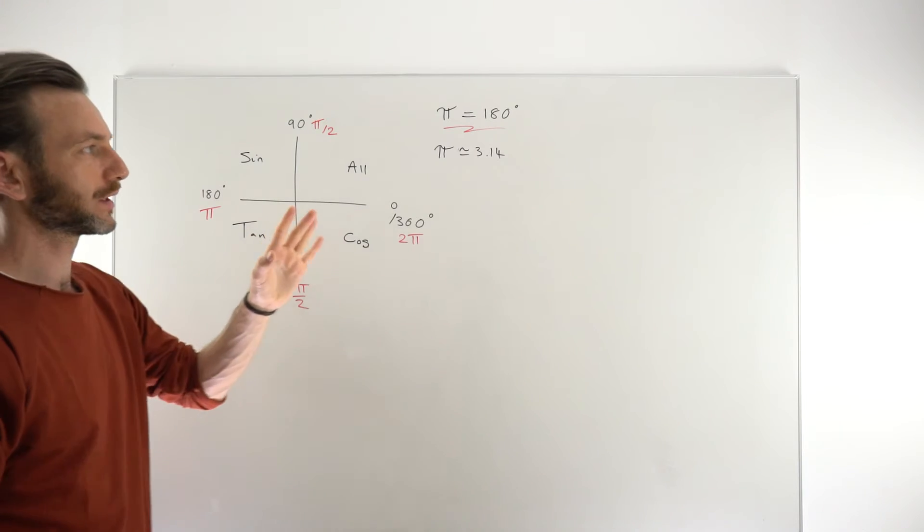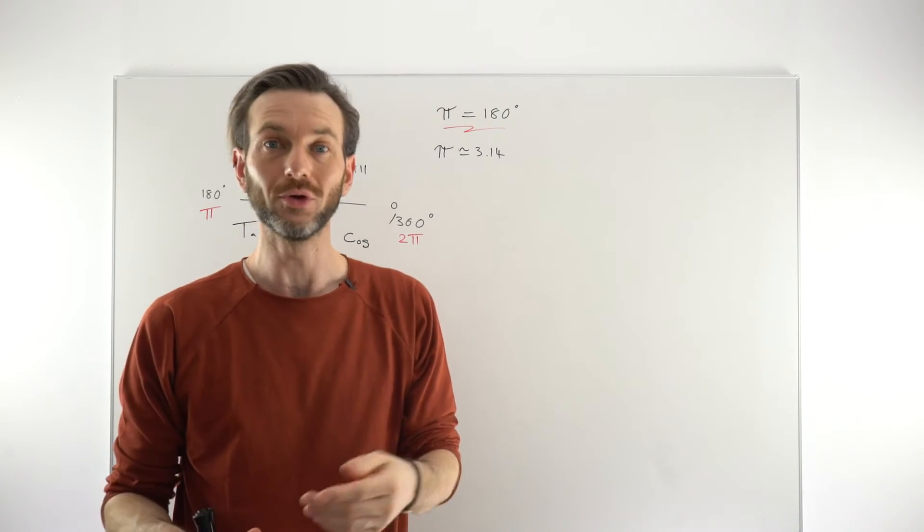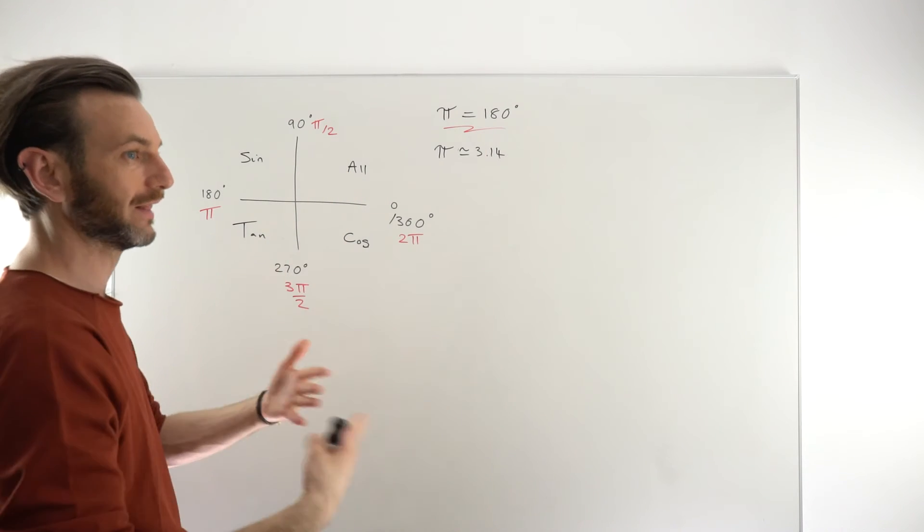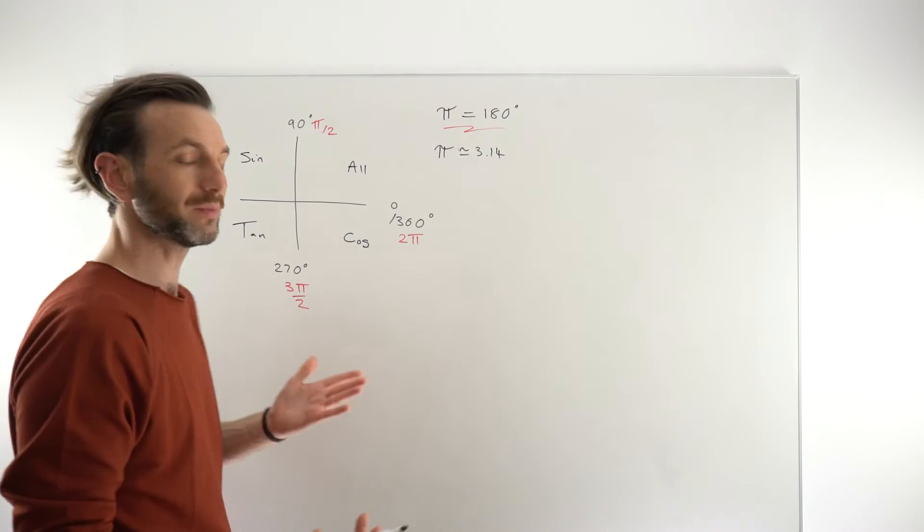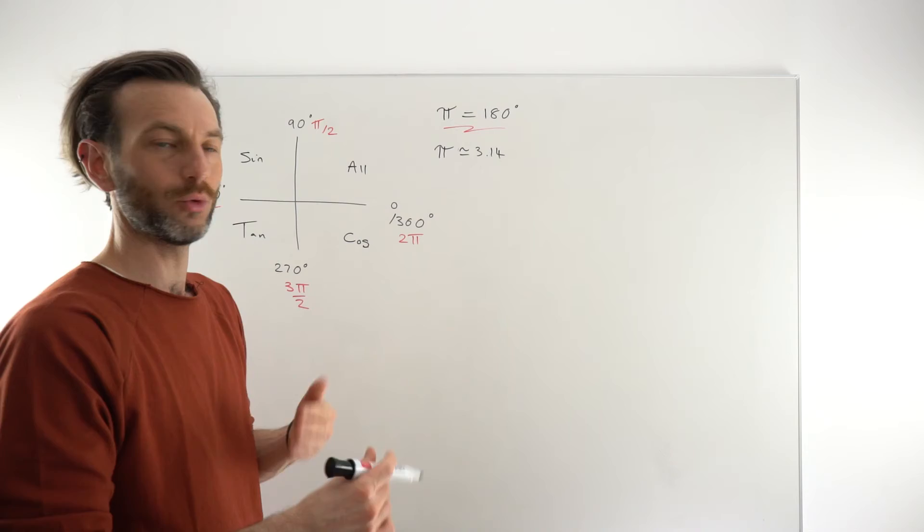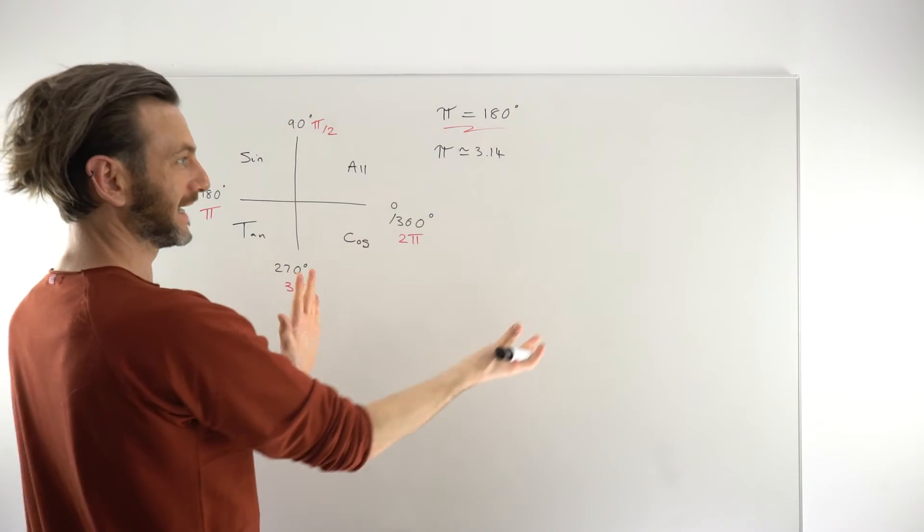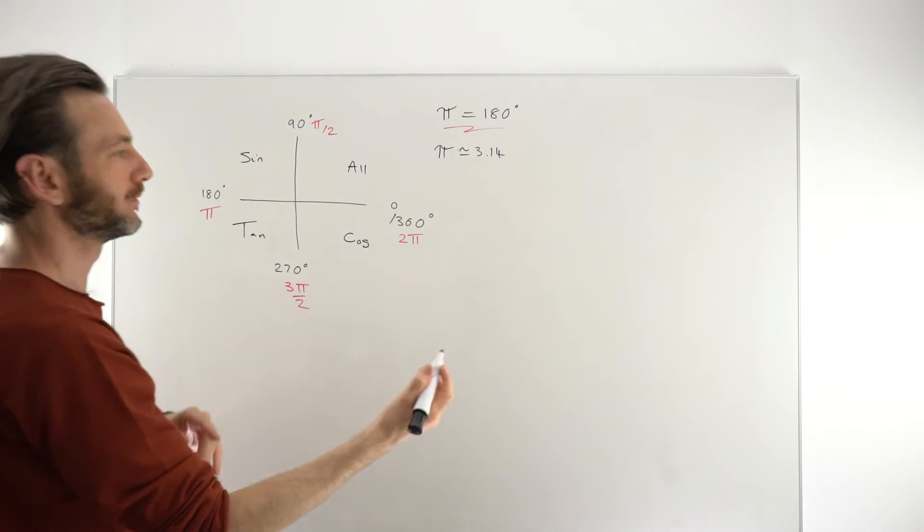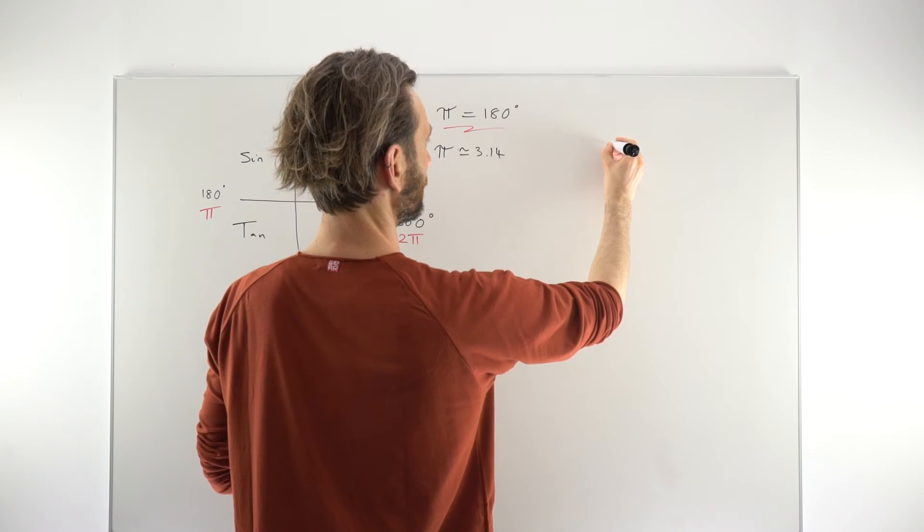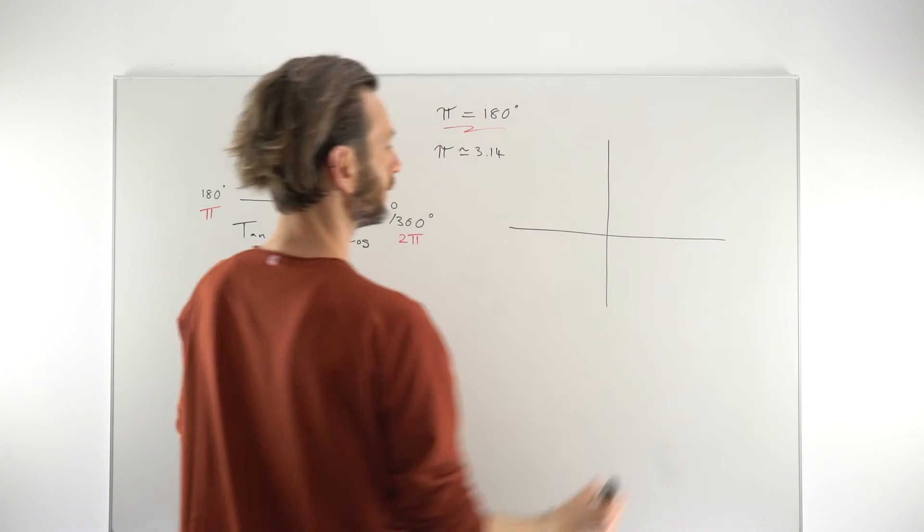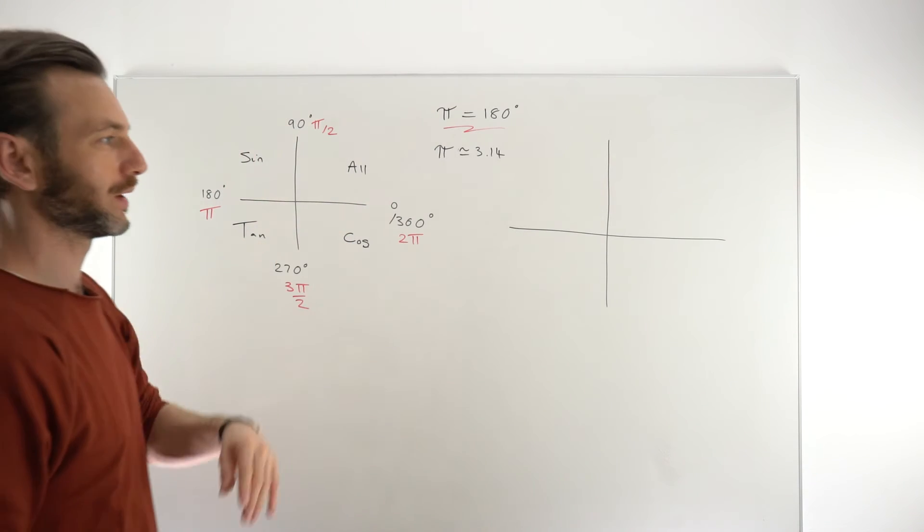So sometimes when you're working a trigonometry question, you're going to have what I call these friendly versions of radians, these friendly π multiples. But sometimes you're not. Sometimes you're going to have decimal versions of radians. And that's really why I'm making this class. That's where the confusion comes in, when you suddenly don't have the friendly, familiar π versions to work with.